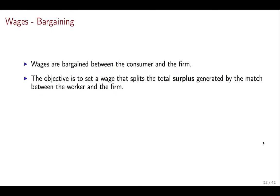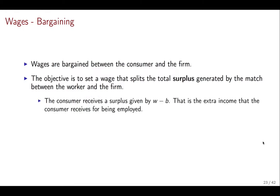We're going to see how this is going to be done. The objective of the bargaining is going to be to set a wage that's going to split the total surplus generated by the match between the firm and the worker in a way that gives each of them a portion of the surplus that's going to be proportional to their bargaining power. So what is this surplus that's being generated?